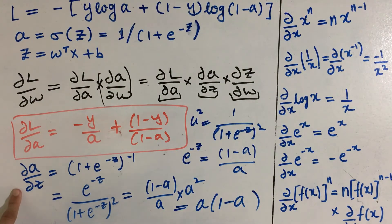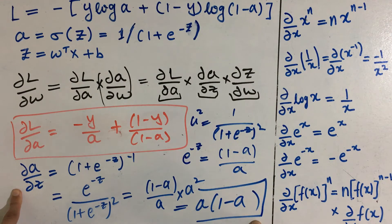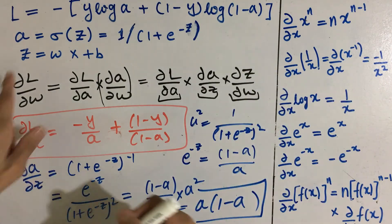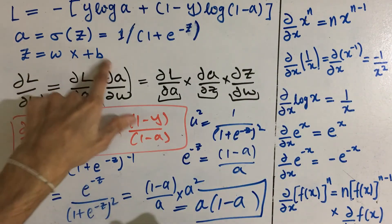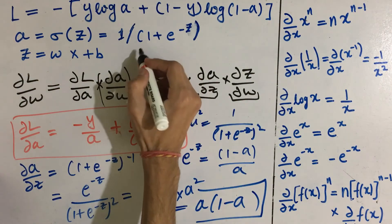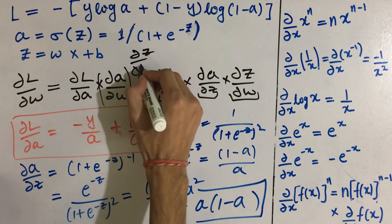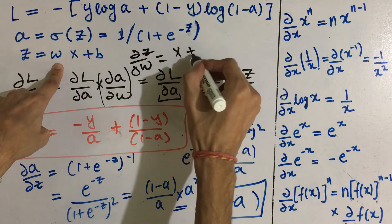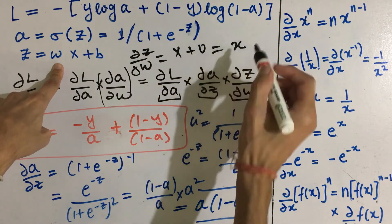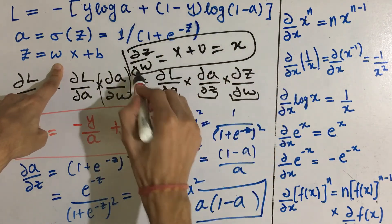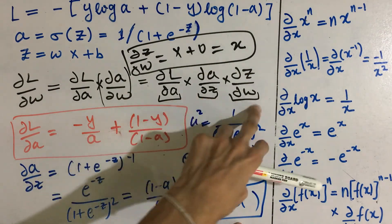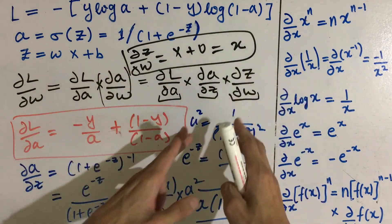Now let's compute del z by del w. Here z is given by wx + b, so del z by del w equals x plus zero, and thus just x. So our del z by del w is simply x. We now have all three terms.